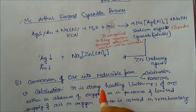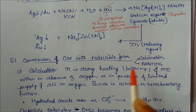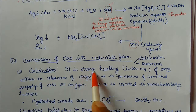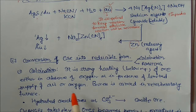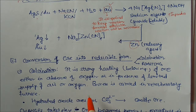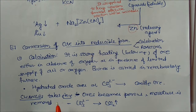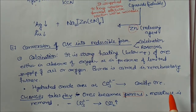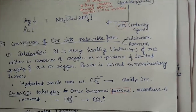After concentration, the target is to convert ore into reducible form. There are two methods: calcination and roasting. Calcination is strong heating of concentrated ore below its melting point, either in the absence of oxygen or with limited supply of air or oxygen, carried out in a reverberatory furnace. Changes that take place include: ores become porous, moisture is removed, volatile impurities are removed, and carbonates are converted to CO2 which escapes as gas.